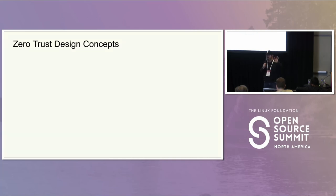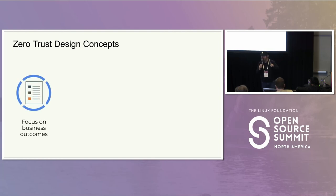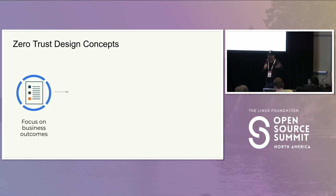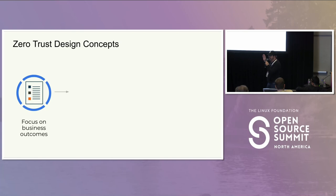There are four design concepts in Zero Trust. The first one is we want to focus on the business outcomes. You must understand what your leadership is trying to accomplish. We don't do this because it's fun — we do it to drive a business or a mission, like if we work for the Air Force. We must focus on that.